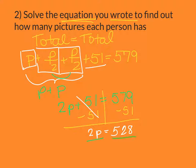Divide both sides by 2. And I know that P is going to equal, well, 2 goes into 5 twice with 1 left over. 2 goes into 12 six times. 2 goes into 8 four times. So P is going to equal 264.